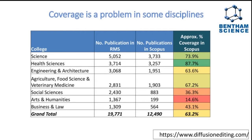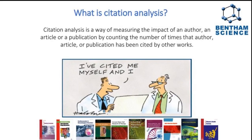Impact factor-based metrics and academic publishing are the key ways that most research assessment is done. Citation analysis is a way to measure the impact of an author, an article, or a publication by simply counting the number of times that article or publication has been cited by other works.